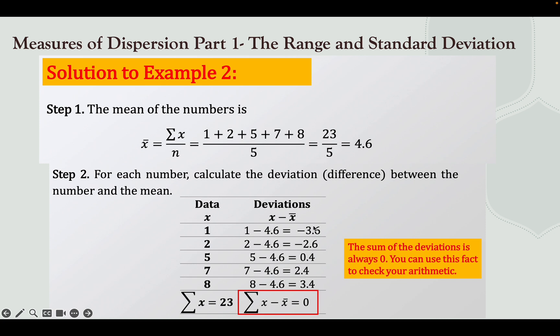Next, find the sum of the deviations. Total all the results, and the sum is 0. Remember that the sum of the deviations is always 0 — you can use this fact to check your arithmetic. If your result is not 0, check your subtraction of the data values and the mean.